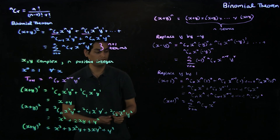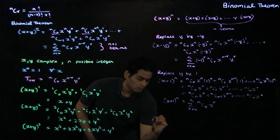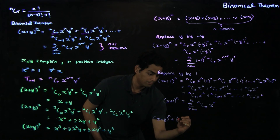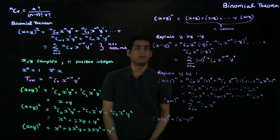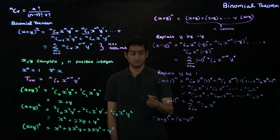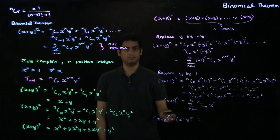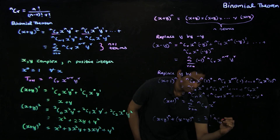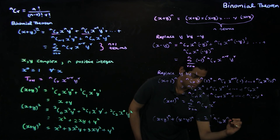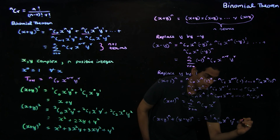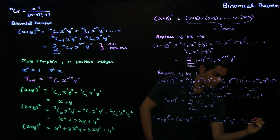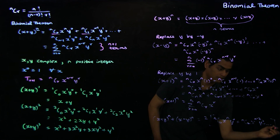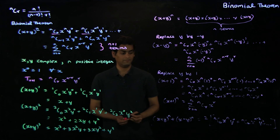Similarly, you can derive an expansion for x plus y to the n plus x minus y to the n. Applying the binomial expansion to these two separate expressions, the alternate terms cancel out and you are left with 2 times the sum of nc0 times x to the n times y to the 0, plus nc2 times x to the n minus 2 times y squared, and so on.